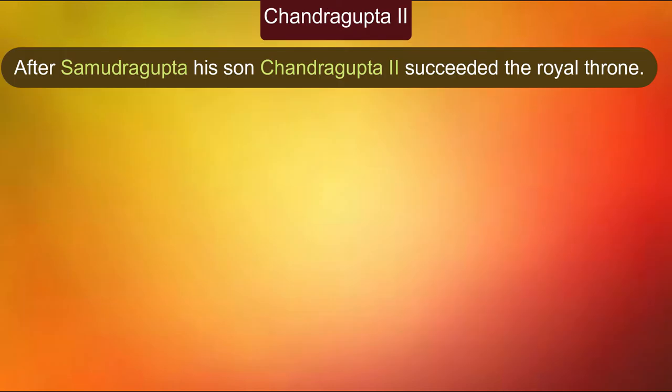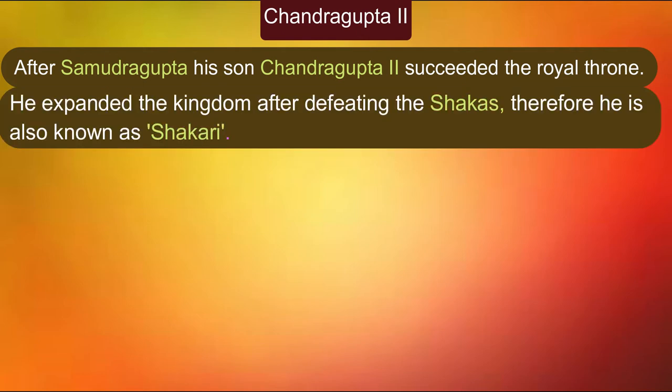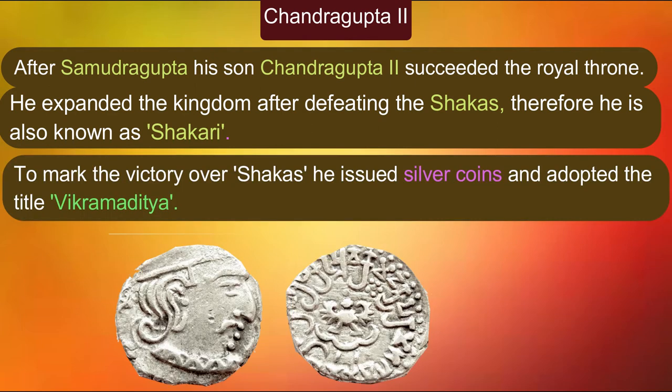After Samudragupta, his son Chandragupta II succeeded the royal throne. He expanded the kingdom after defeating the Shakas. Therefore, he is also known as Shakari. To mark the victory over the Shakas, he issued silver coins.